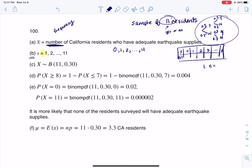Did I have a fixed number of observations? I did, so I can check that off. Could I call something a success? And I could. They would say yes to that question. I have adequate earthquake supplies. So let me write, CA resident has adequate earthquake supplies.